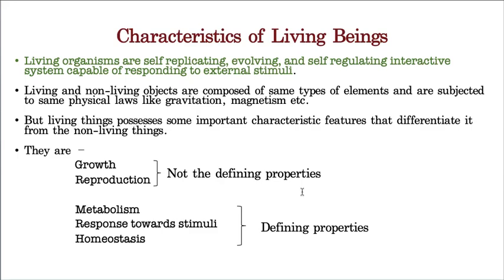Every organism must show metabolism, every organism must have the ability to respond towards stimulus, and every organism must have cellular organization. If an organism is not showing metabolism, it will obviously die. These three are defining characters — must-and-should properties performed by organisms. That's why they are called defining properties, whereas growth and reproduction are non-defining properties.